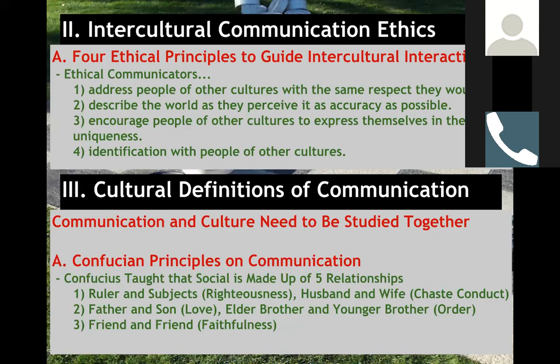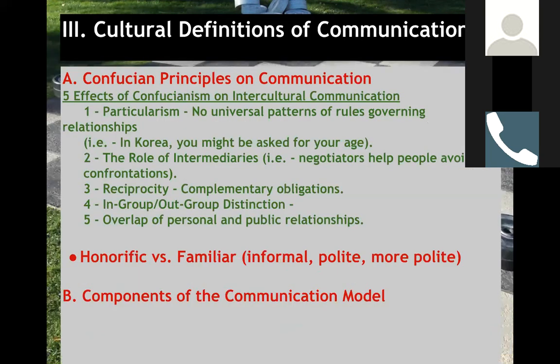Confucian principles of communication identify five key relationships: the ruler and subjects — the leader and those being led; husband and wife — a romantic relationship; father and son — a functional family relationship; elder brother and younger brother — a hierarchy-based relationship where the elder makes decisions; and friend and friend. These are different dynamics within which communication happens, and these principles differ by culture.